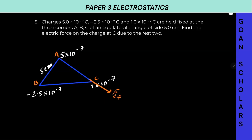The force on C due to B — attractive or repulsive? It will be attractive, because one is positive and one is negative, so they are attracted along the line joining the two. This is the force on C due to B.